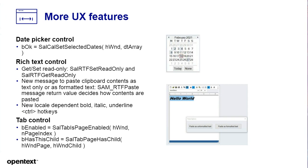More UX features: the date picker control now allows you to preset selected dates, so when you bring up a window you can have certain dates already selected — for example, to show dates already taken for a reservation. The rich text control has several new things: you can get or set the read-only state to make it uneditable in certain circumstances. You can paste clipboard contents into the rich text control as either formatted or unformatted text using a new message called Sam RTF paste, whose return value determines the paste format.